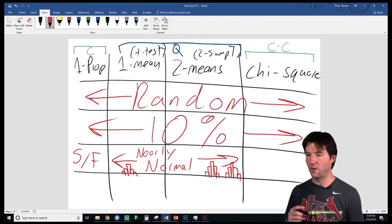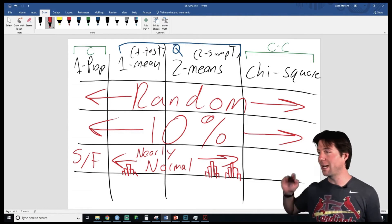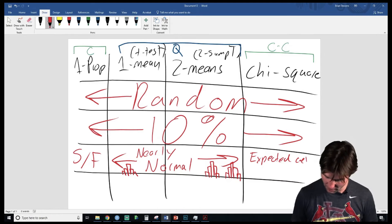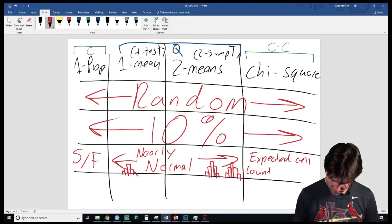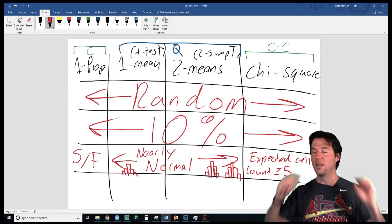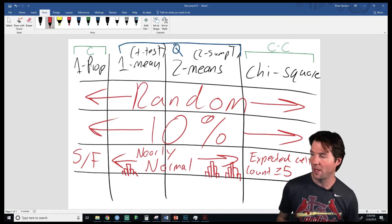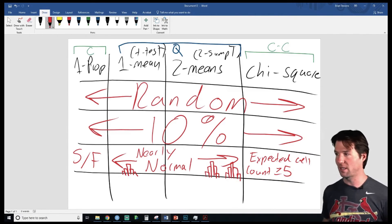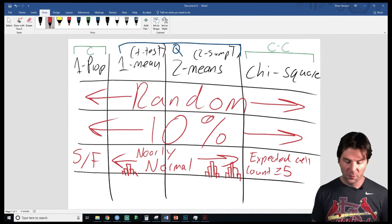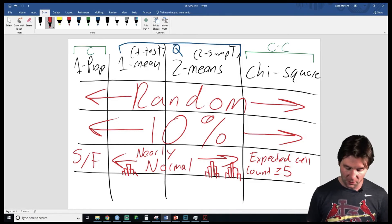This right here, we want all the success failures to be greater than or equal to 10. The chi-squared's third condition is expected cell count, greater than or equal to five. If it's exactly five, don't worry - we don't do that on the test. Expected cell count greater than or equal to five. Last but not least, we do have a fourth condition. The fourth condition only applies to the last few things.